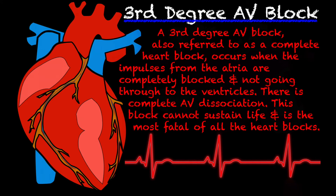First, let's define a third degree AV block. A third degree AV block, also referred to as a complete heart block, occurs when the impulses from the atria are completely blocked and they're not going through to the ventricles. There is complete AV disassociation. This block cannot sustain life and is the most fatal of all the heart blocks. Many people walk around with first degree heart blocks and that can clinically mean nothing, but in the case of third degree AV block, it is a very, very serious situation.